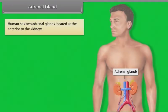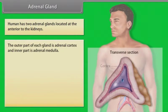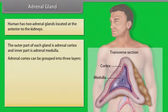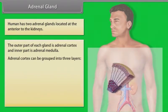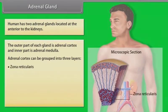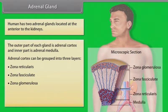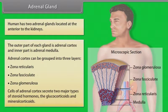Humans have two adrenal glands located anterior to the kidneys. The outer part of each gland is the adrenal cortex and the inner part is the adrenal medulla. The adrenal cortex can be grouped into three layers: zona reticularis, zona fasciculata, and zona glomerulosa. Cells of the adrenal cortex secrete two major types of steroid hormones: glucocorticoids and mineralocorticoids.